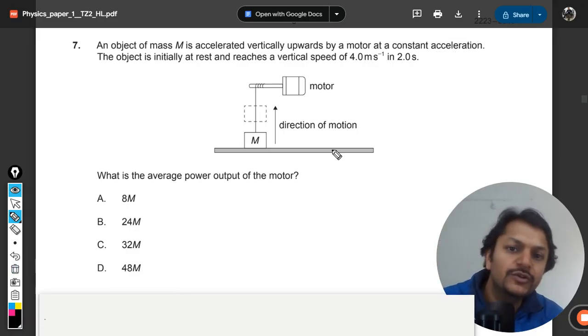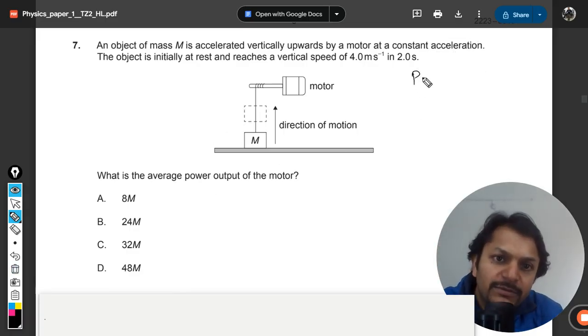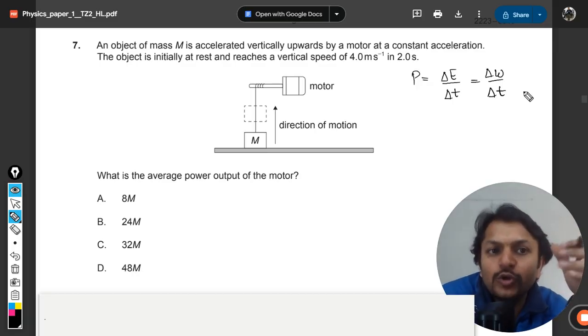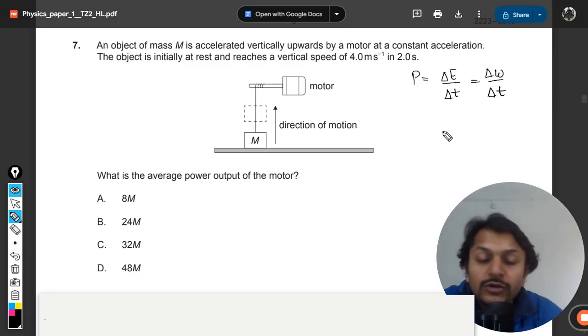What are we going to do now? There is another concept. Power is also defined as change in energy divided by change in time, or rate of doing work. We have to find the total work that is done, or the total change in energy. The work is equal to the change in total energy here.